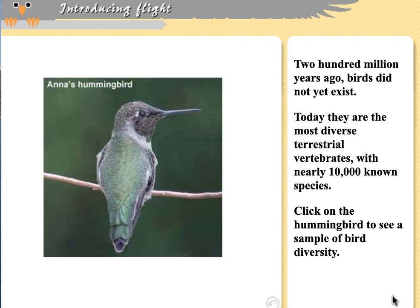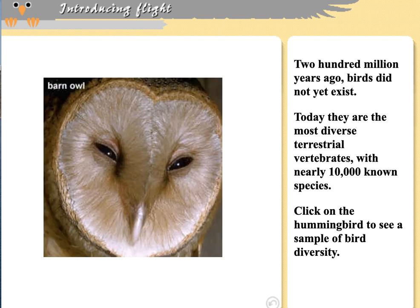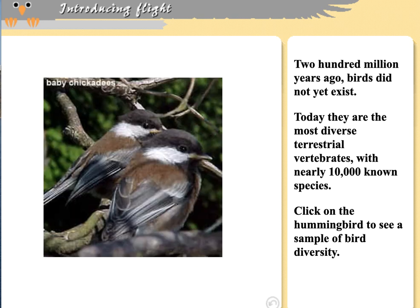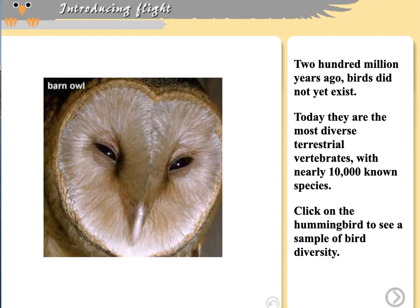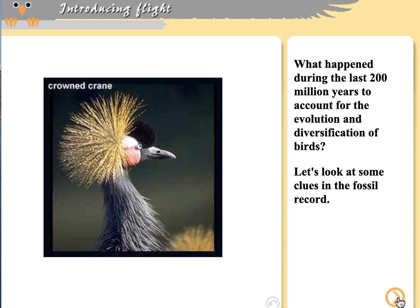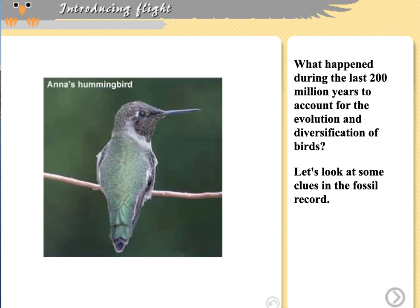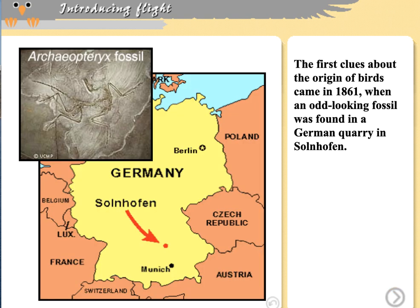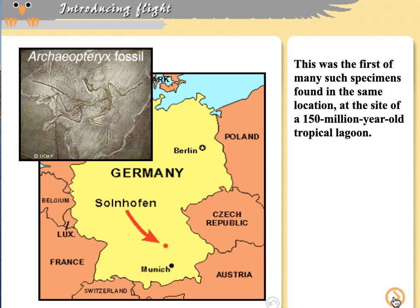We're going to focus on birds in particular. There's a fair amount of bird diversity, including flightless birds and birds that possess flight. We want to look at the fossil record and figure out how we can understand bird evolution. We begin in Germany, where a particular fossil found in 1861 was of great importance. That fossil is Archaeopteryx, found in a site described as a tropical lagoon, where fine sediments preserve very delicate features.